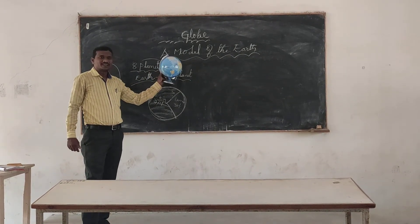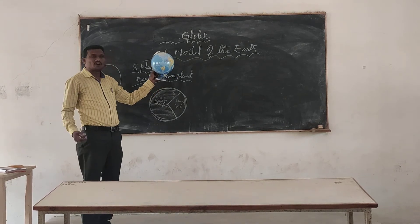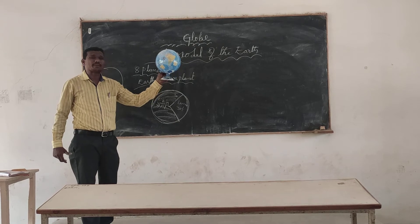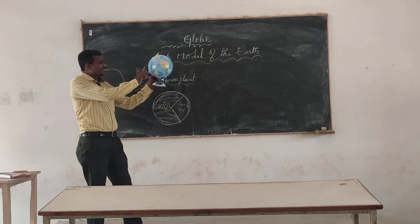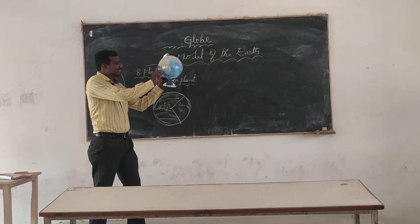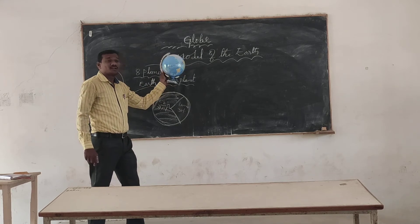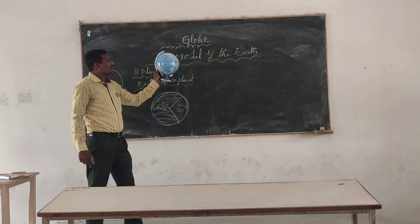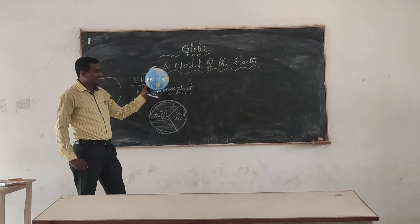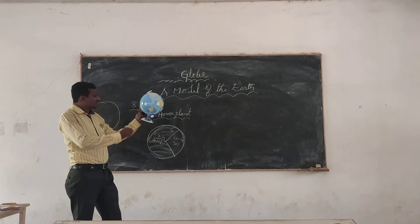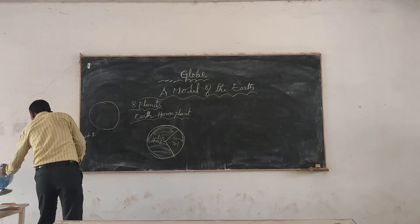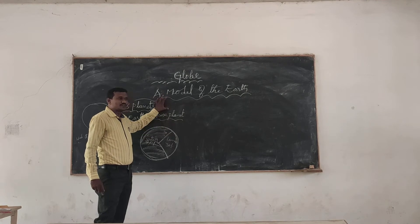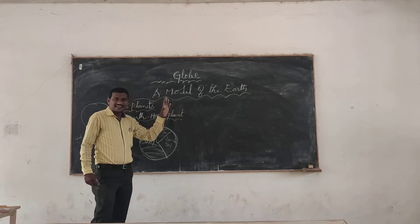I am forming groups of five or six students. Five or six students form a group and they study the globes. Then only the students will know the clear picture of the Earth — like the shape of the Earth, which is round, spherical, or circular. The globe is also used to show the clear picture of the Earth and the land.